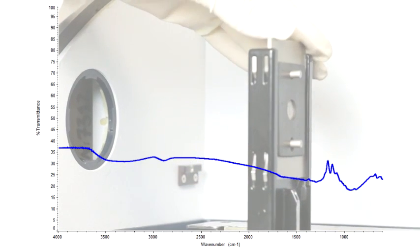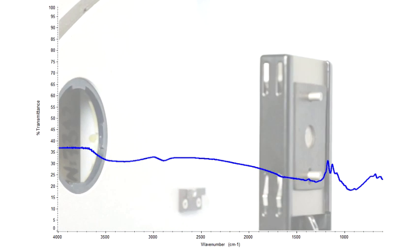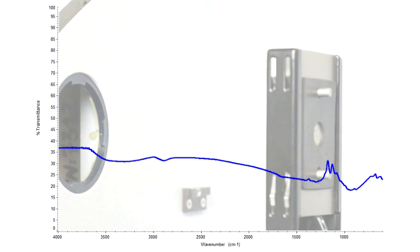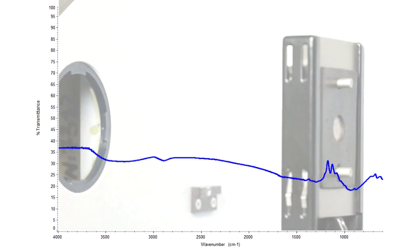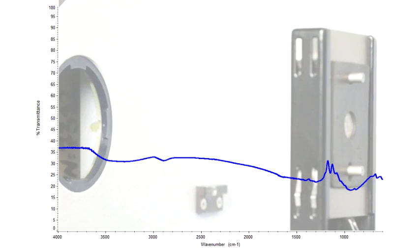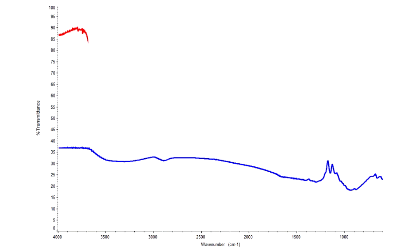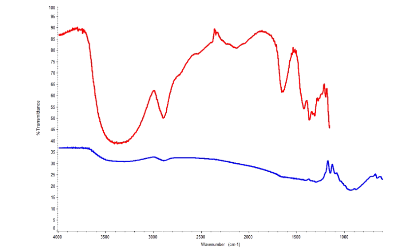The diffuse nature of the sample produced significant scattering of the beam after passing through the sample, resulting in low transmission values and minimal useful chemical information when using the DTGS detector of the spectrometer. The spectrum collected using the integrating sphere yielded a vast amount of chemical information.